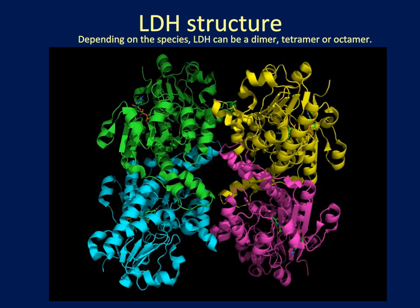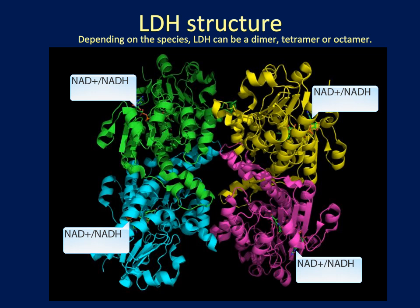LDH forms a multimer in solution. Depending on the species, LDH can form a dimer, tetramer, or octamer. Here the tetramer is shown with each individual subunit colored a different color. Each monomer is an active unit and each subunit has an NAD molecule non-covalently bound.